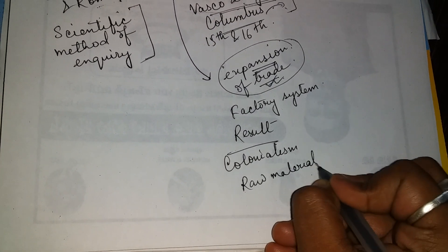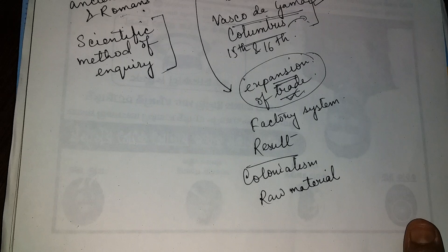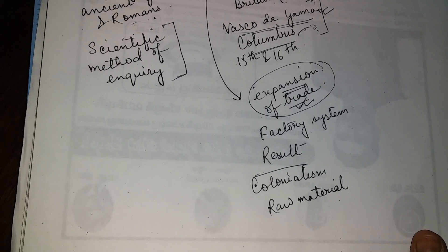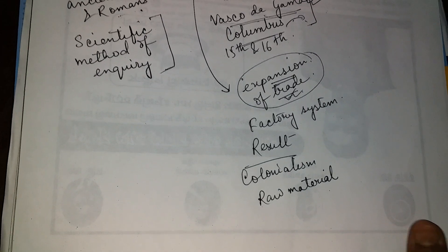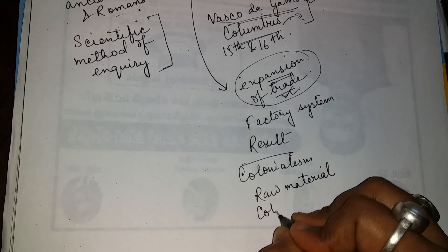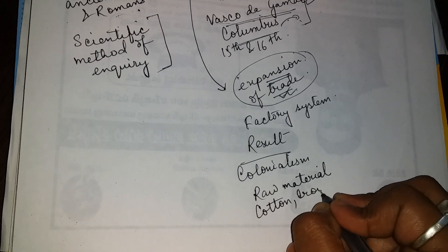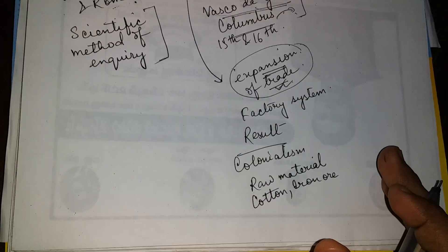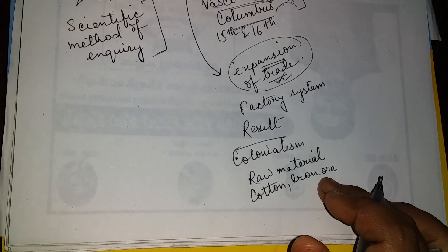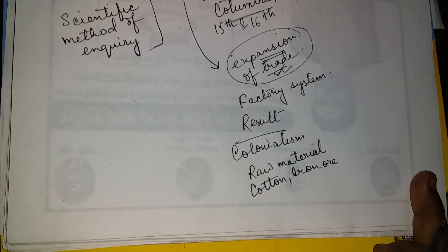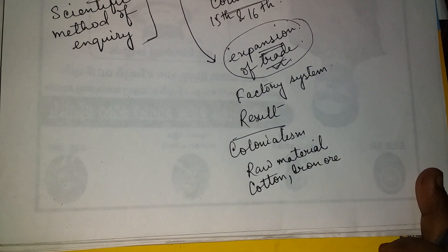The factories also needed raw materials like cotton and coal. This prompted Britain and other European countries to search overseas for colonies. They made colonies to serve as a market for the finished goods and as a source of raw materials.